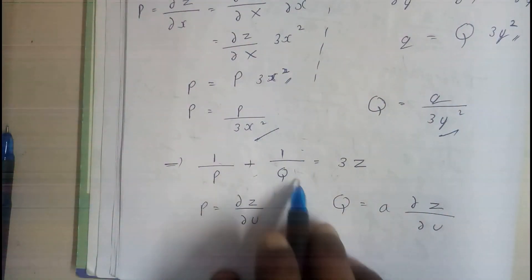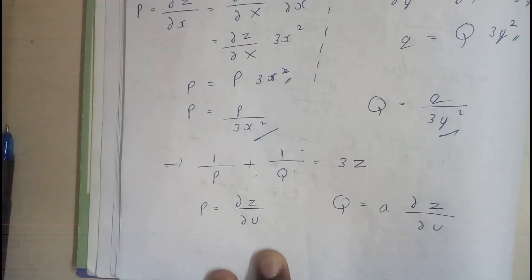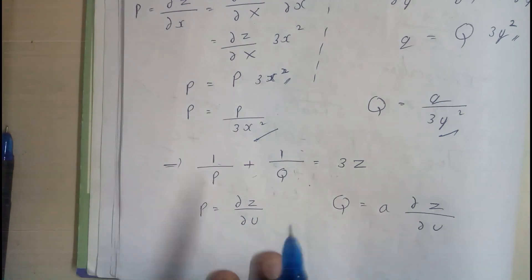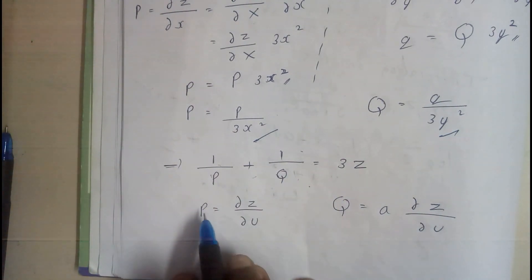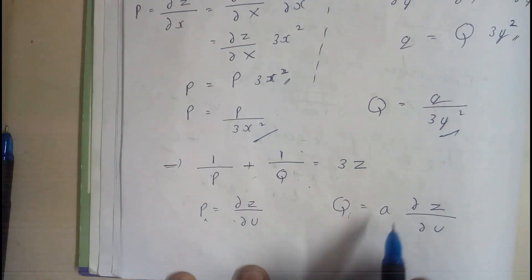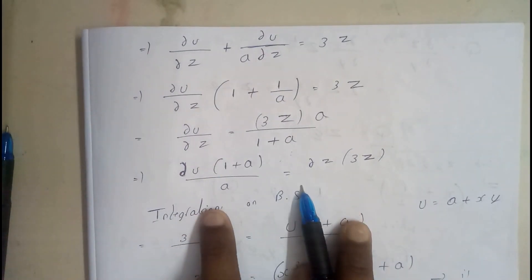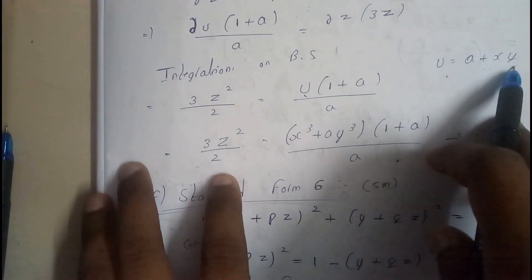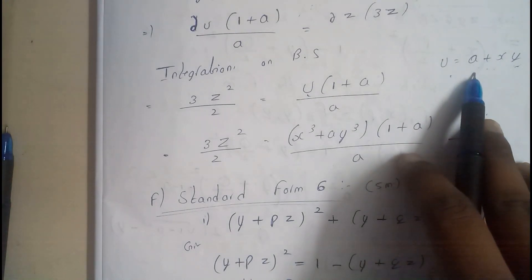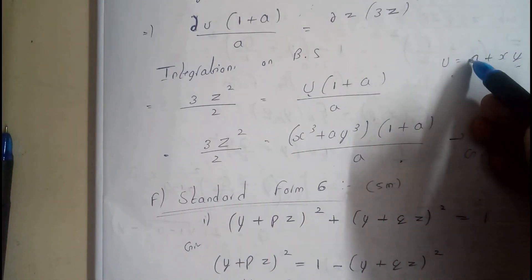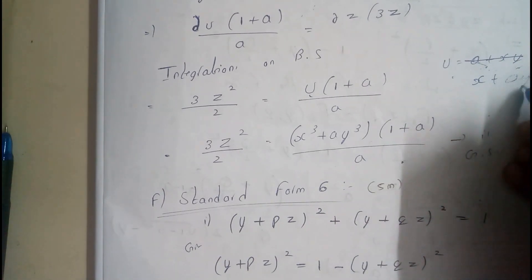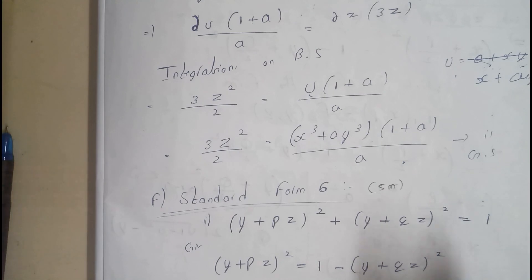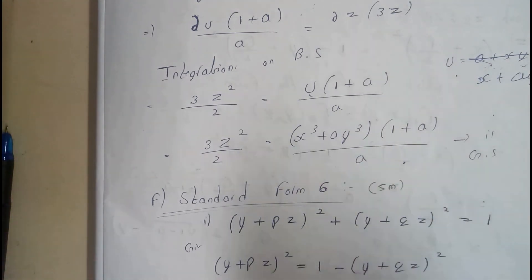Substituting capital P and Q into the equation gives 1/P + 1/Q = 3z, which is again in the second standard form in terms of P, Q, and Z. So P = ∂z/∂u and Q = a · ∂z/∂u. Applying the variable separable method with double integration on both sides gives the general solution, where u = X + aY with X = x³ and Y = y³.